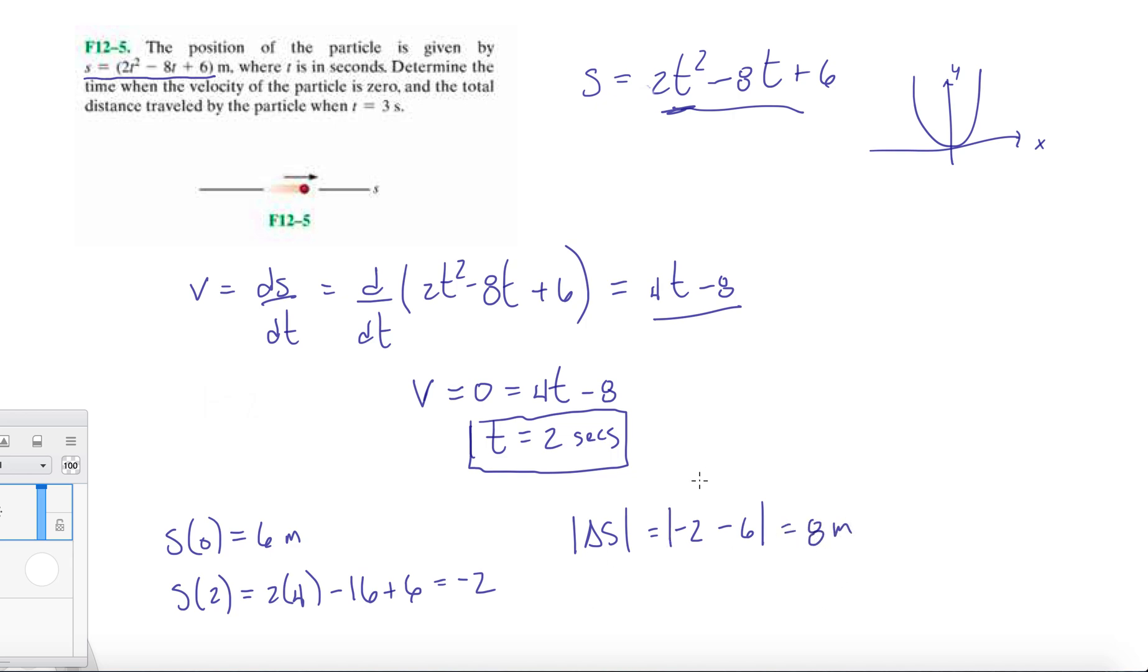Now at t equals 3, the position at time equals 3, that's 2 times 9, minus 24, plus 6. 18 minus 24, that's minus 6, plus 6 is 0. So the position from 0 to 2, and then this is the absolute distance between 2 to 3 - 0 minus minus 2. Absolute distance, so it's 2 meters.